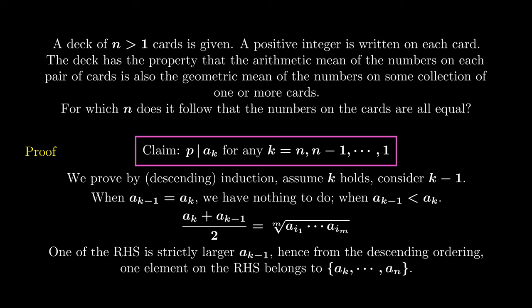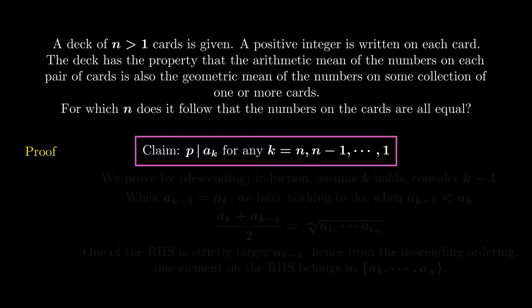Therefore, one of the right-hand side is strictly larger than ak-1, which belongs to the set ak to an. Now, from the induction, p divides any number between ak to an. So, p divides the product on the right-hand side...